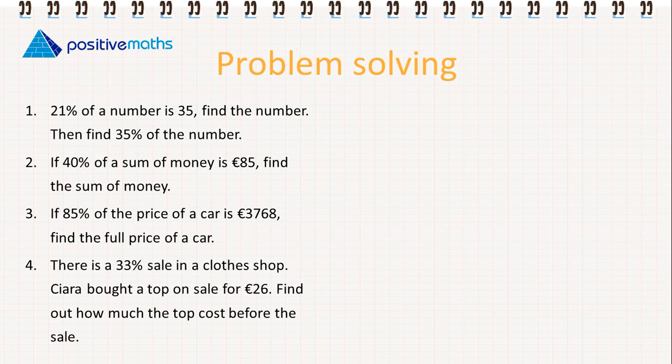21% of a number is 35. Find the number, then find 35% of the number. Let's start off. We have 21% is equal to 35. We must first find 1%. So 1% is going to be equal to 35 divided by 21.